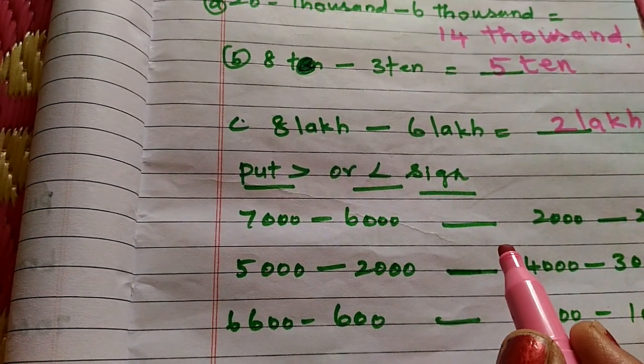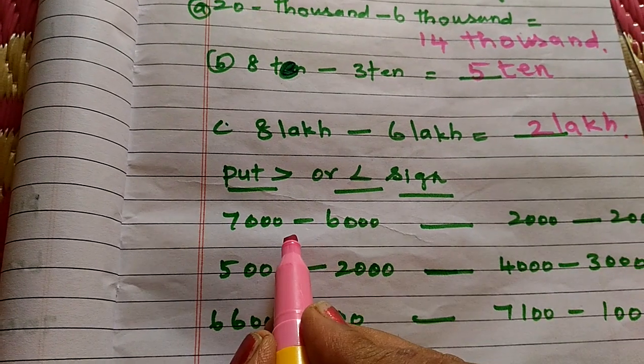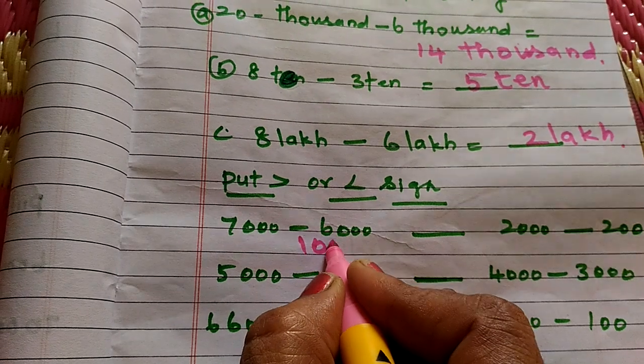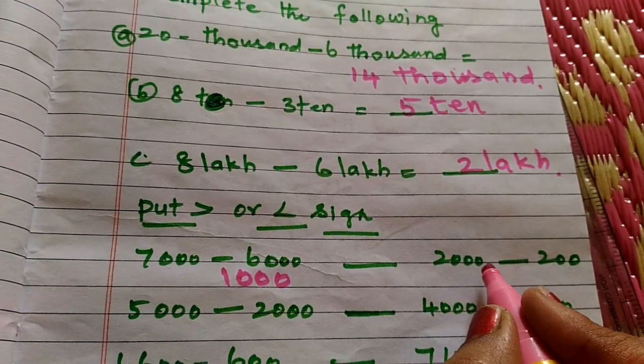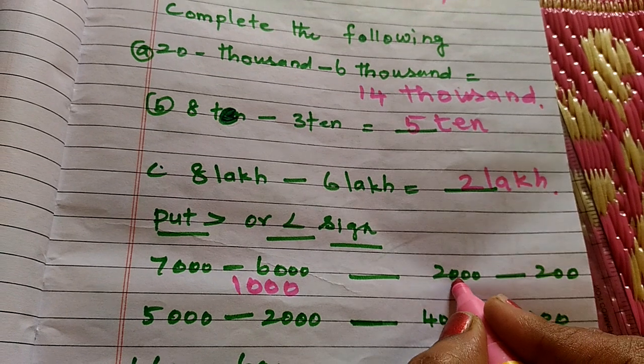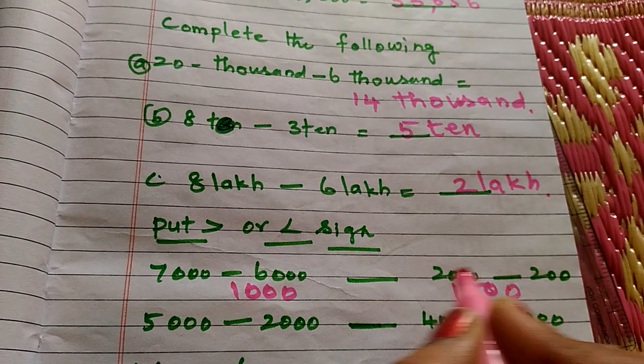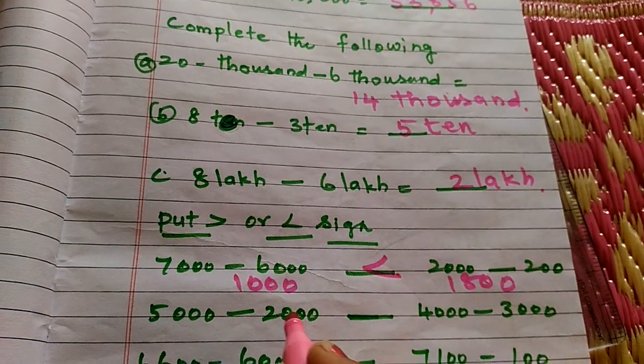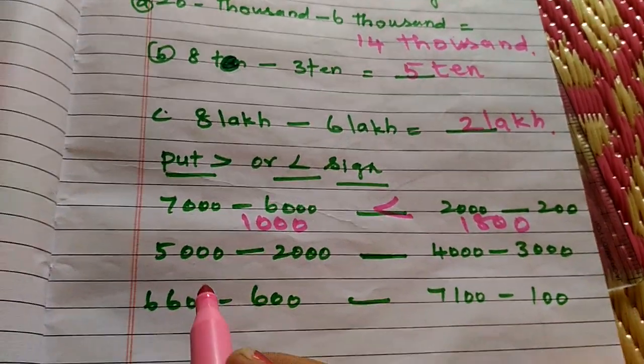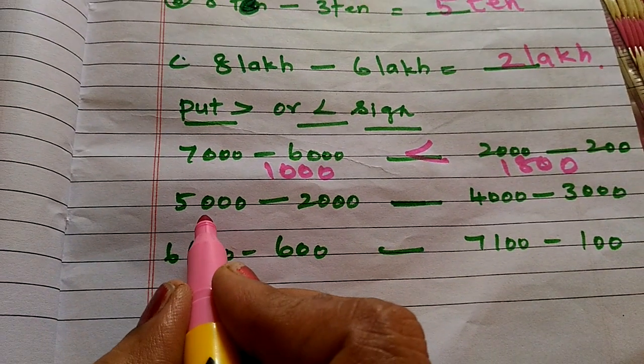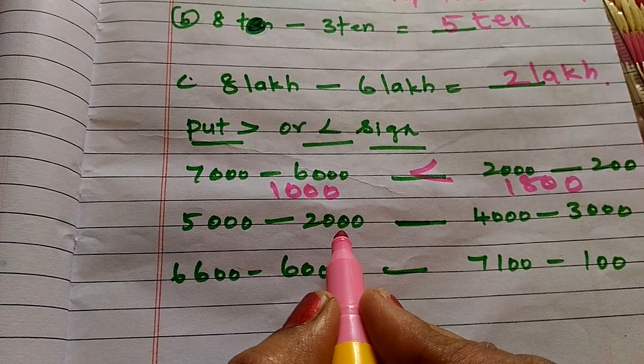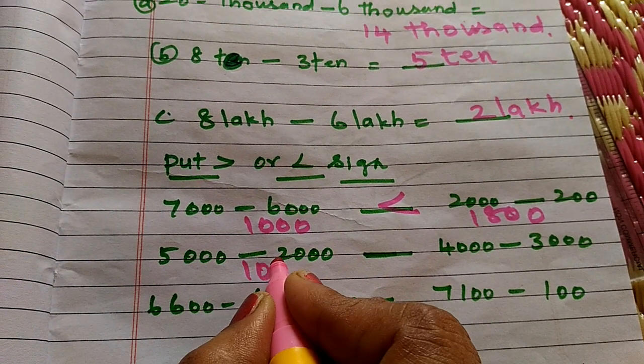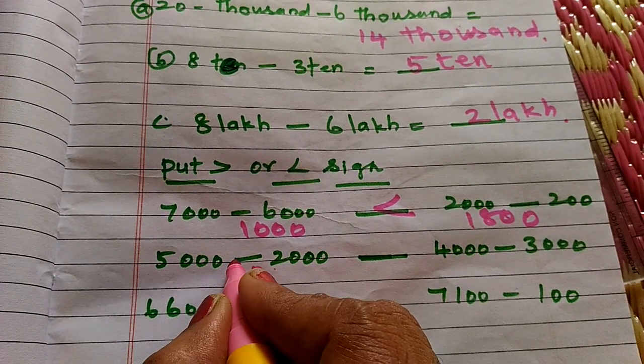Put greater than or less than sign: 7,000 minus 6,000 equals 1,000. See here, 2,000 minus 200 equals 1,800. Which one is the bigger number? 1,800 is bigger, so 1,000 is less than 1,800.